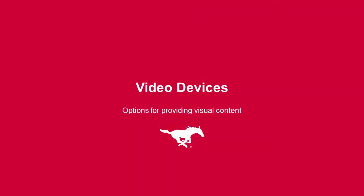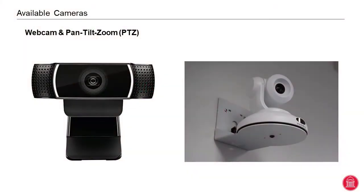Now let's go over our new video options. In each room, you will find either a simple webcam or a camera mounted on a wall or ceiling to provide the video source for your meeting. The webcam will either be mounted on the podium or on a microphone stand. If it is on a microphone stand, you can move the camera to where it works best for your course.